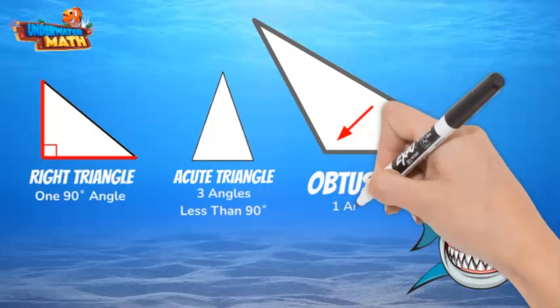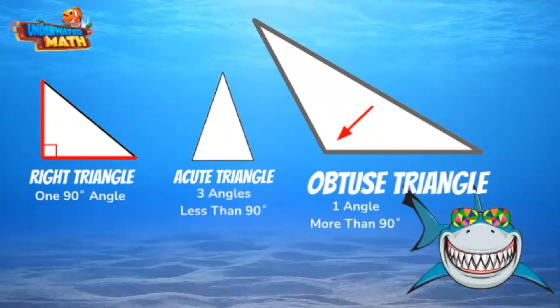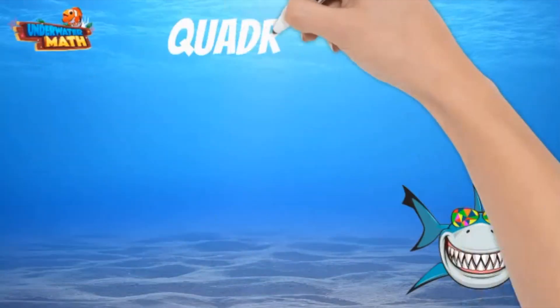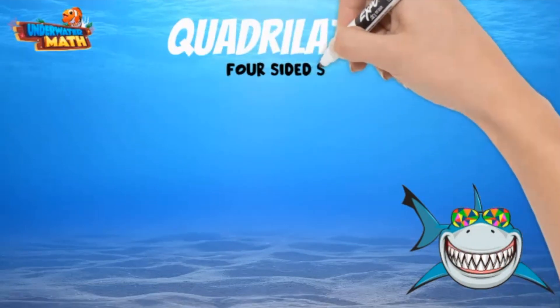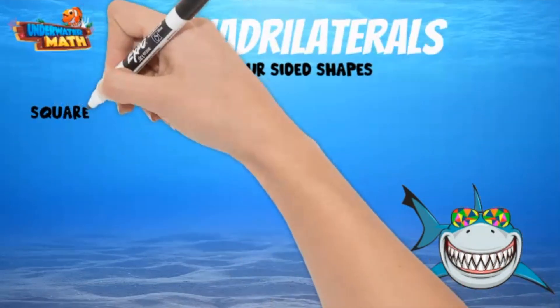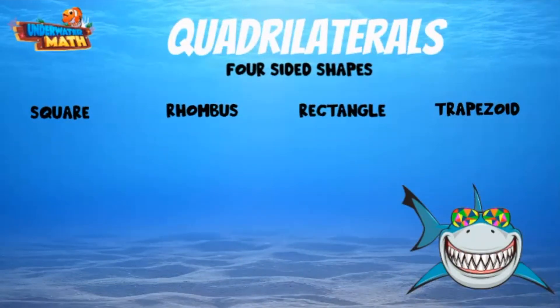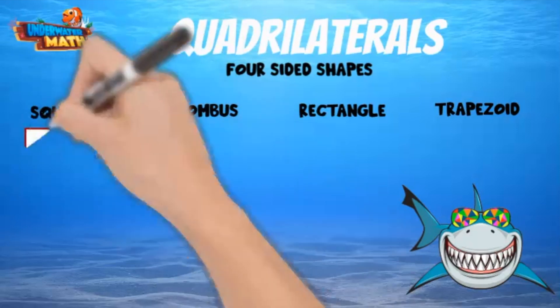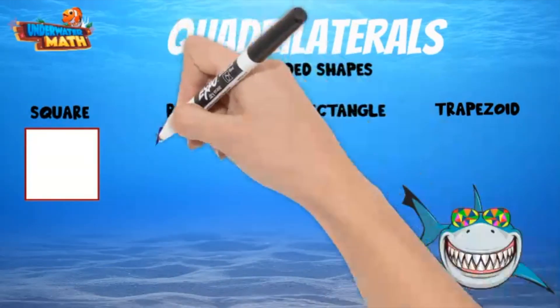Next, we need to look at quadrilaterals. A quadrilateral is a shape with four sides, like a square, rhombus, rectangle, or trapezoid. A square has four equal sides and four right angles. A rhombus also has four equal sides but does not have right angles — it looks like a slanted square.